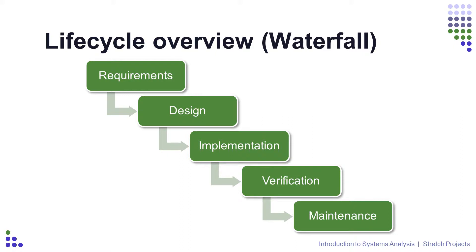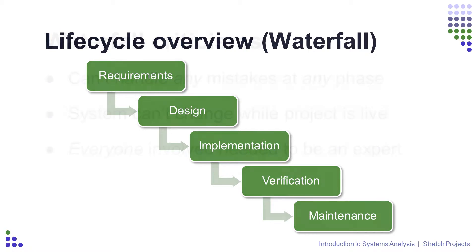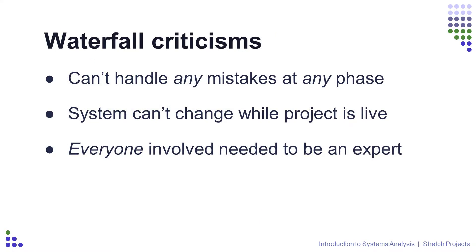This methodology was called Waterfall, because there is no going back. If there is a mistake in the requirements stage, it's almost impossible to go back and change things later on, which means that everything had to be perfect. It's also called Waterfall because of the tool used to manage systems using this methodology — the Gantt chart — which resembles a waterfall. People started to use this methodology in the real world and, because humans aren't perfect, they did make mistakes in the requirements stage, which caused problems throughout the rest of the project.